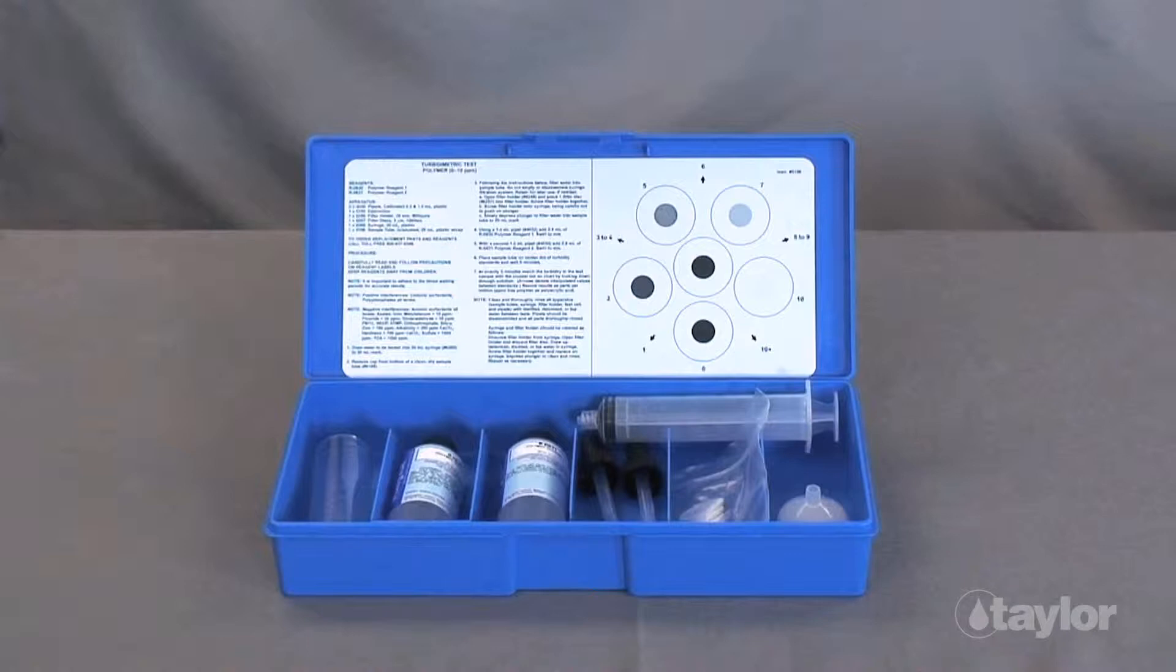The test method is turbidometric, meaning the degree of cloudiness that develops in a test sample will be proportional to the amount of polymer in the water. Results are read as parts per million polyacrylic acid.